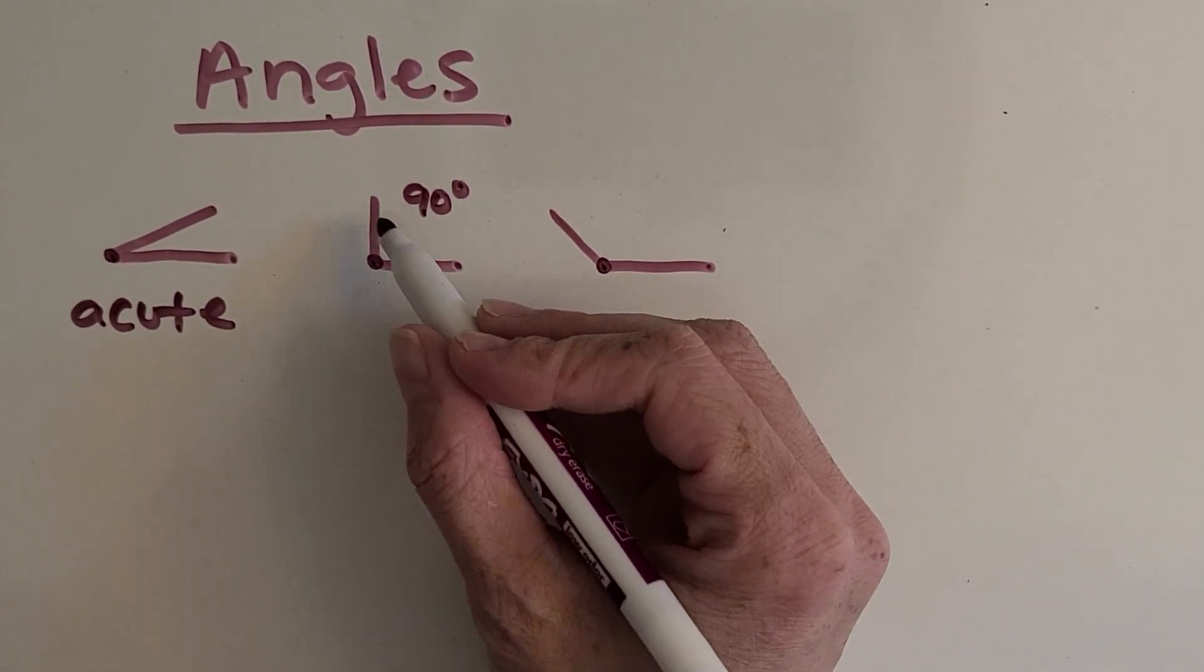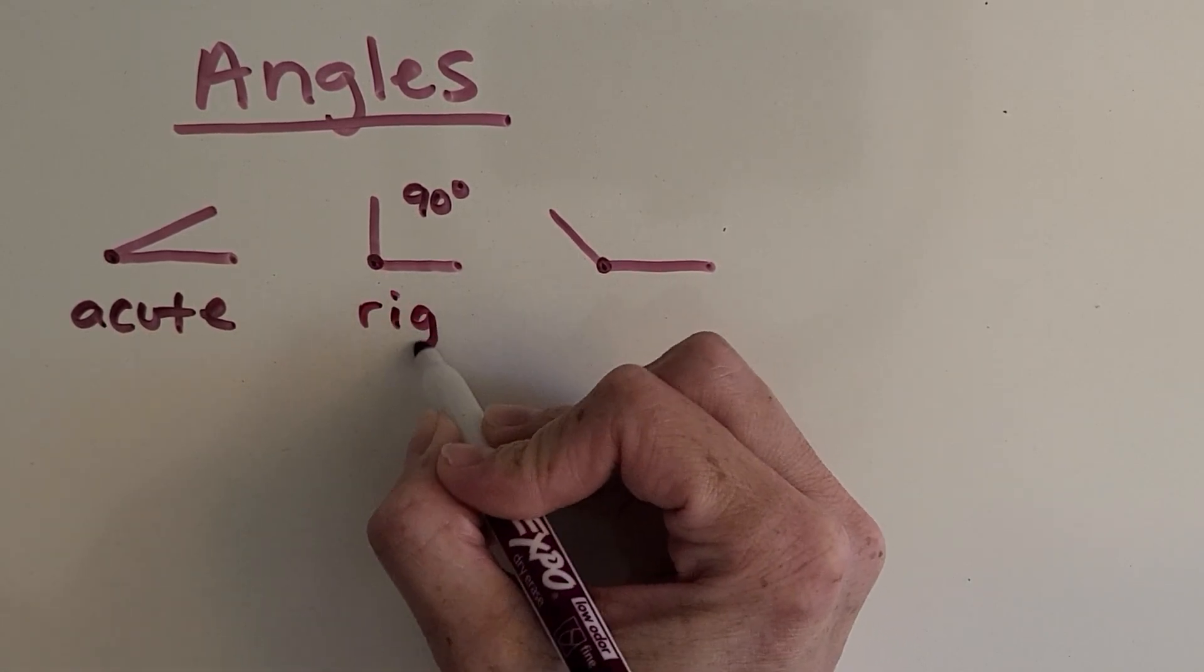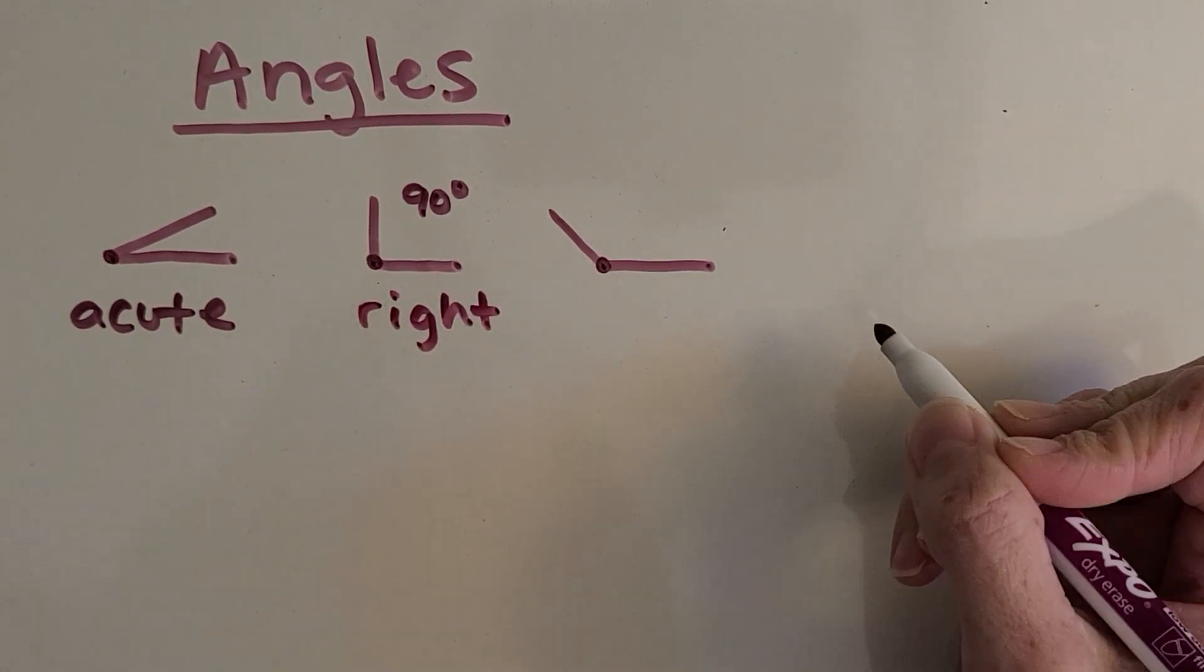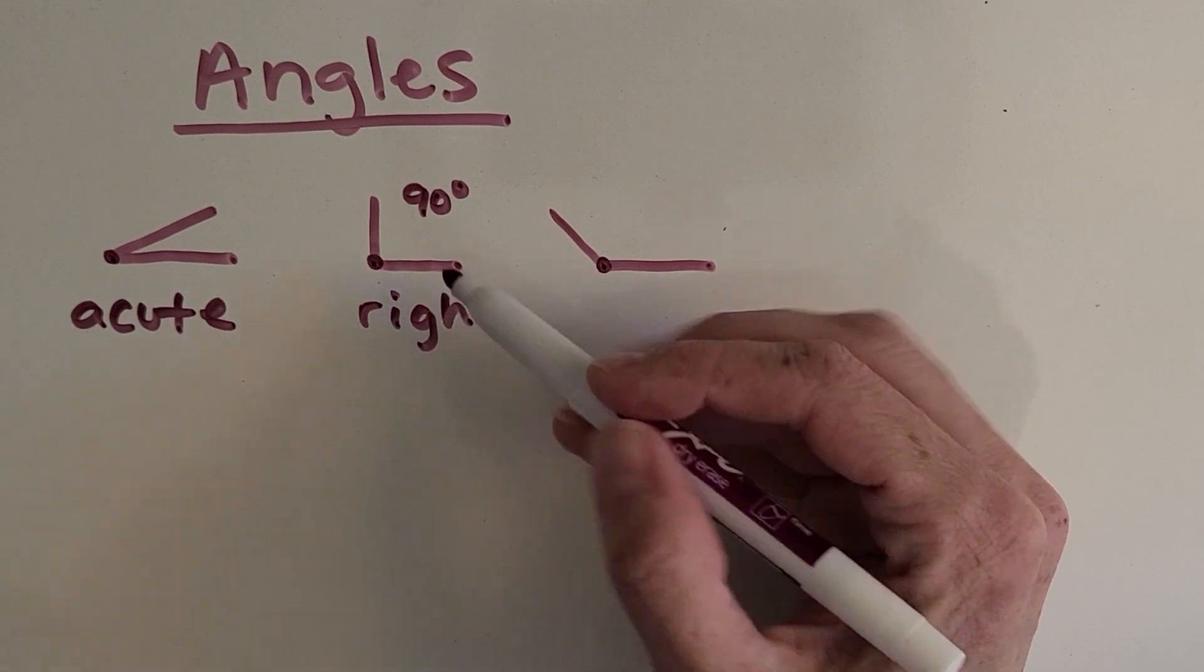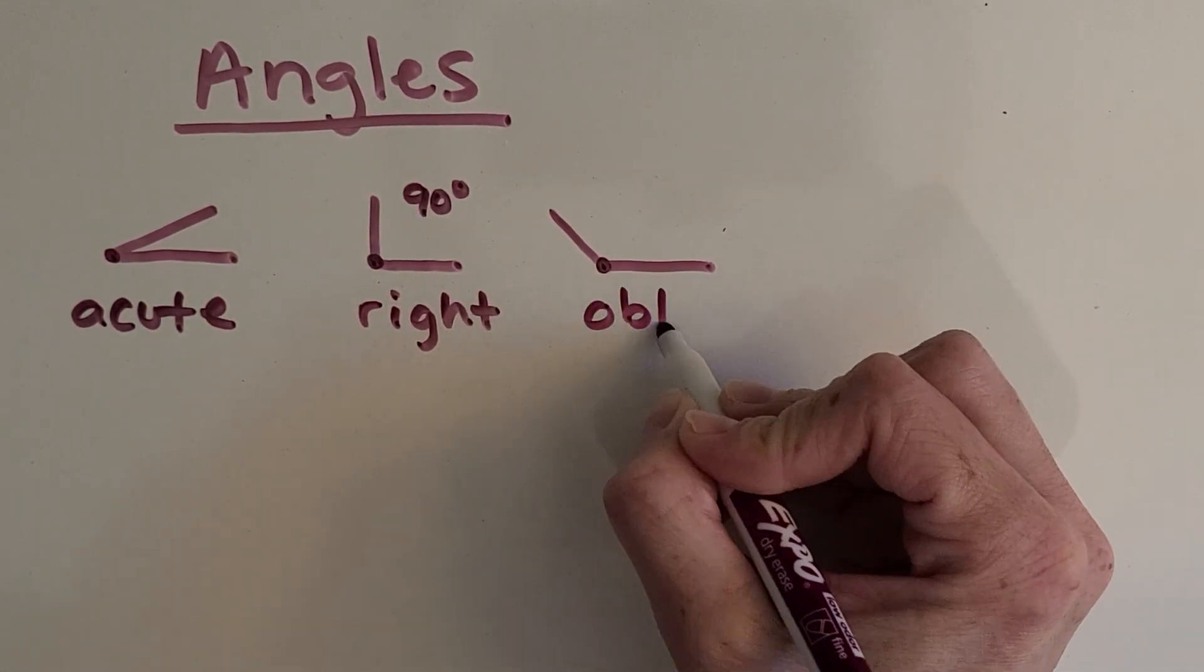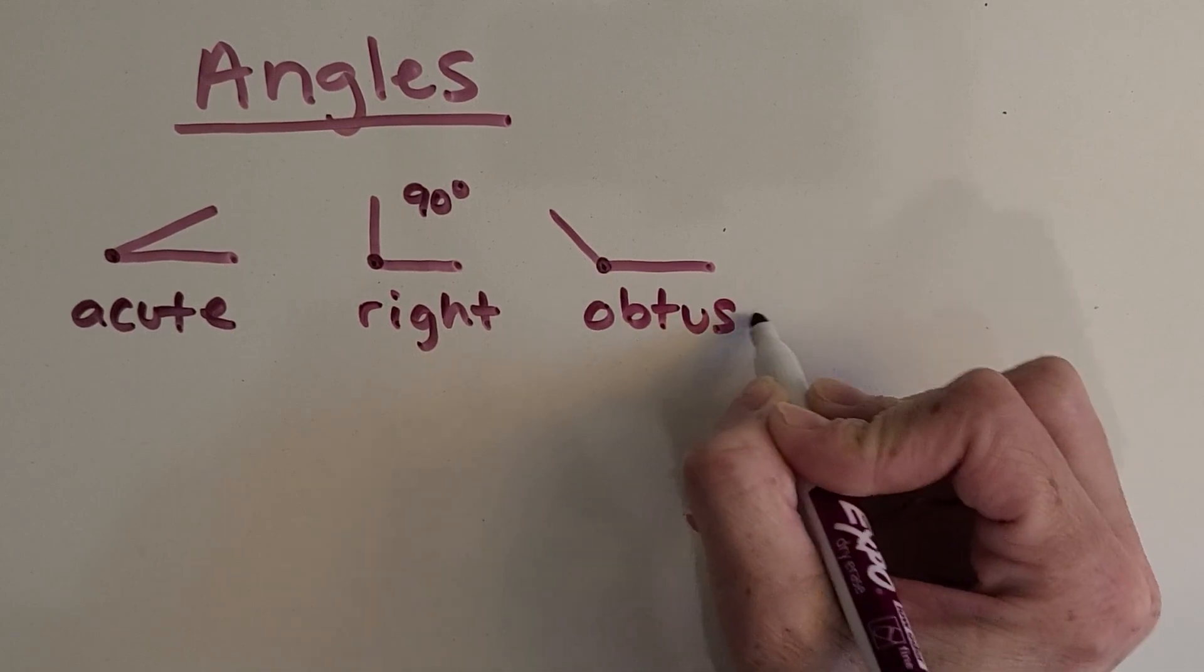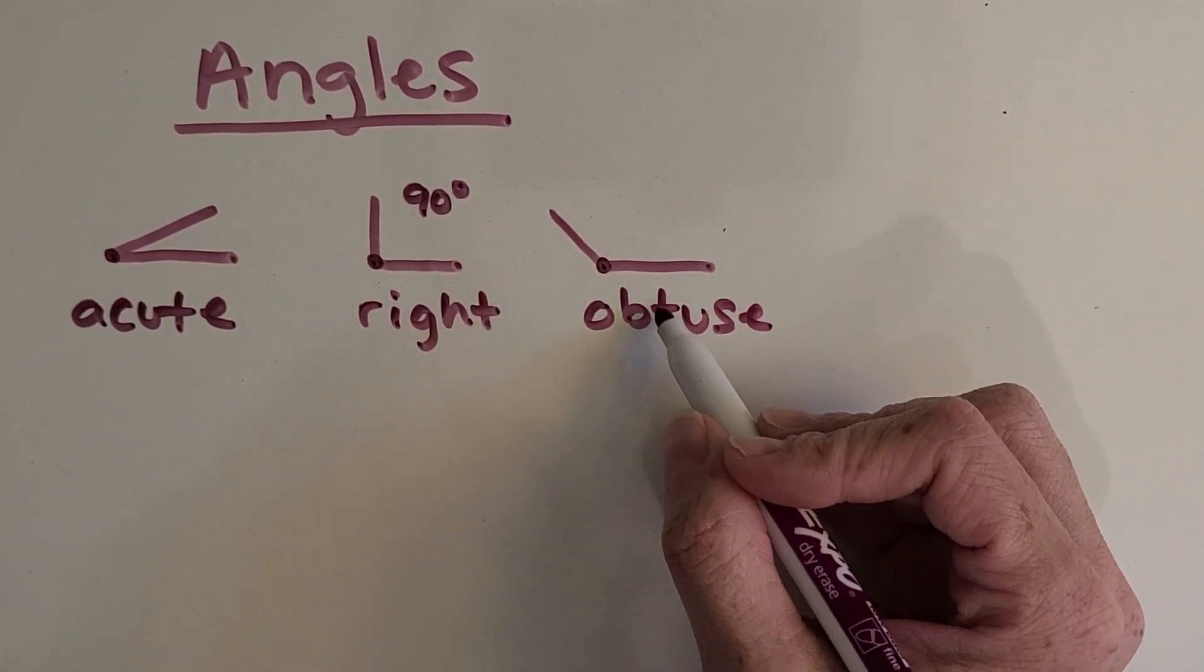Then we have perfect square corners. And we can also call them a right angle. And then we have angles that are larger than a right angle. Larger than 90 degrees. Those are called obtuse. I like to say obtuse as a moose. And that helps me to remember that they're large.